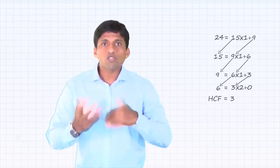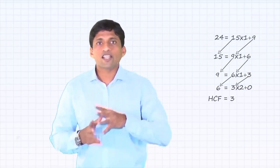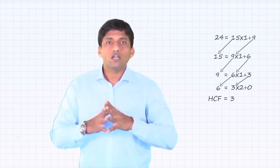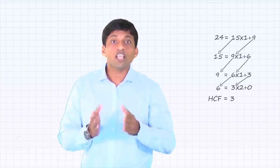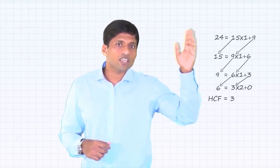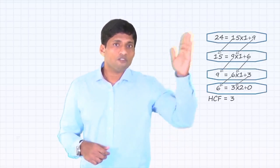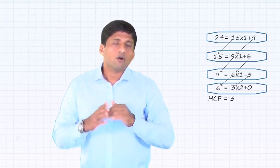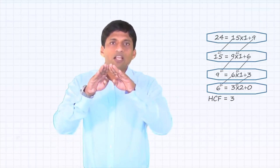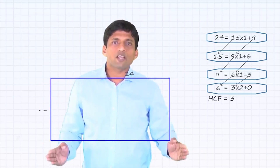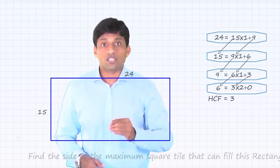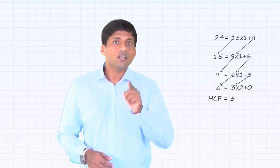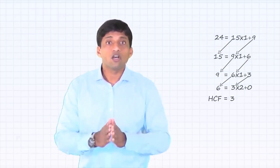Now, an interesting application of this — using words — I'll help you relate to this with a scenario which all of us can understand, and I'll show that in a diagram. Assume there is a rectangular wall of 24 meters in length and 15 meters in breadth. I need to fill this wall using square tiles of the same size. What is the side of the maximum square tile which can be used to fill this wall? That, if you can find out, is nothing but the highest common factor.